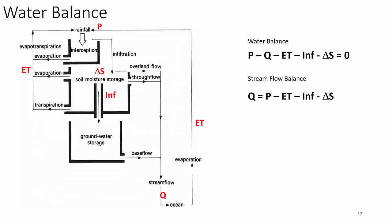Moving to a conceptual systems diagram: precipitation is either intercepted by vegetation or hits the ground directly, leading to overland flow. It then hits the soil, leading to infiltration and throughflow, which leads to stream flow. Groundwater storage leads to base flow, which also leads to stream flow Q. Change of storage occurs in the soil, above the soil, and to a lesser extent in groundwater. Evaporation occurs throughout the entire process. Evaporation is the entropic engine driving and pulling the hydrologic cycle at all times.